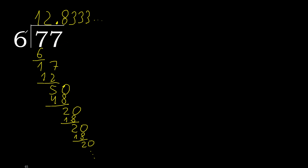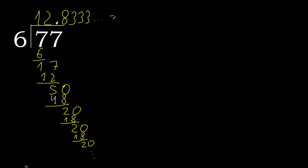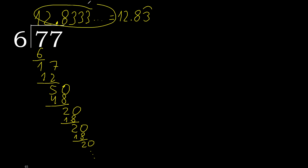77 divided by 6 is — here, or after the point: 3 repeat. Therefore like this, or like this. 3 repeating.